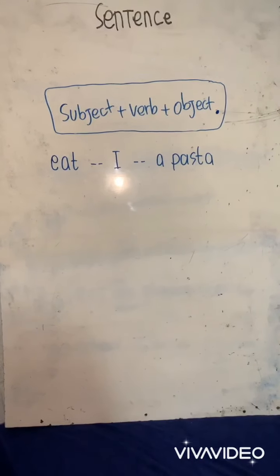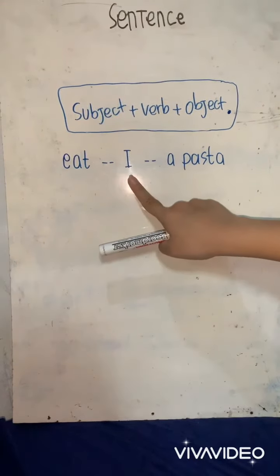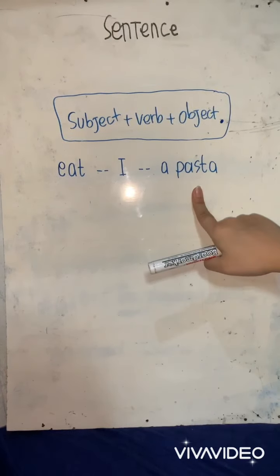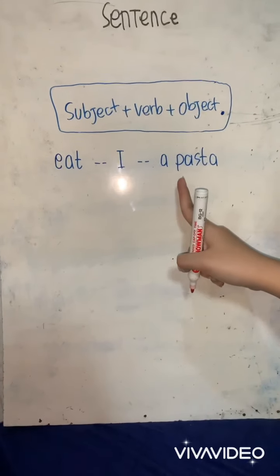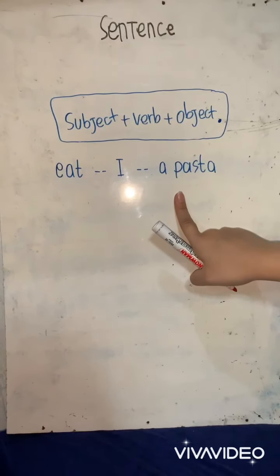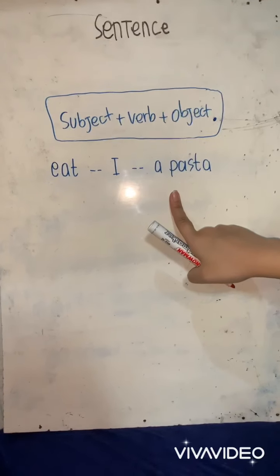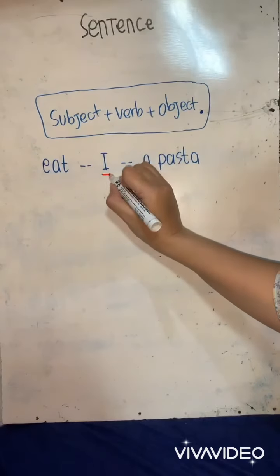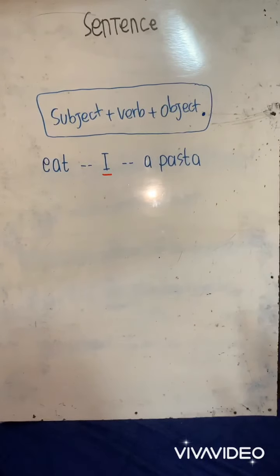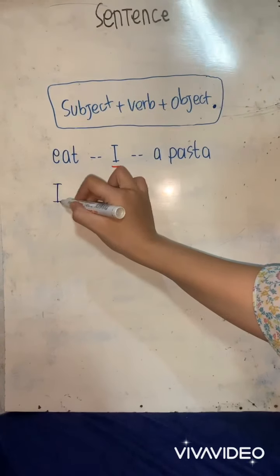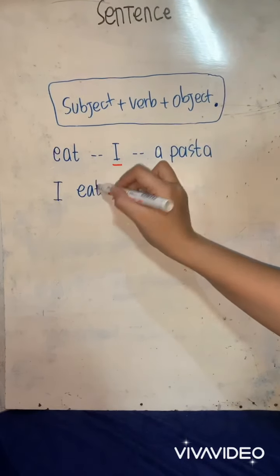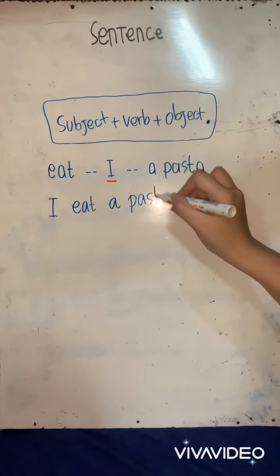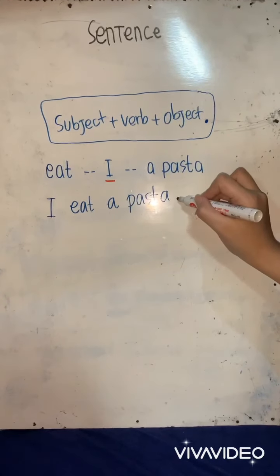I have an example: Eat, I, pasta. Does it make sense to you? No! We need to arrange it into a good sentence. Remember to begin a sentence with a capital letter. Which one is the capital letter? This one — I. So I must be the first letter. I eat — the verb — and the object, pasta. Don't forget to put a full stop.